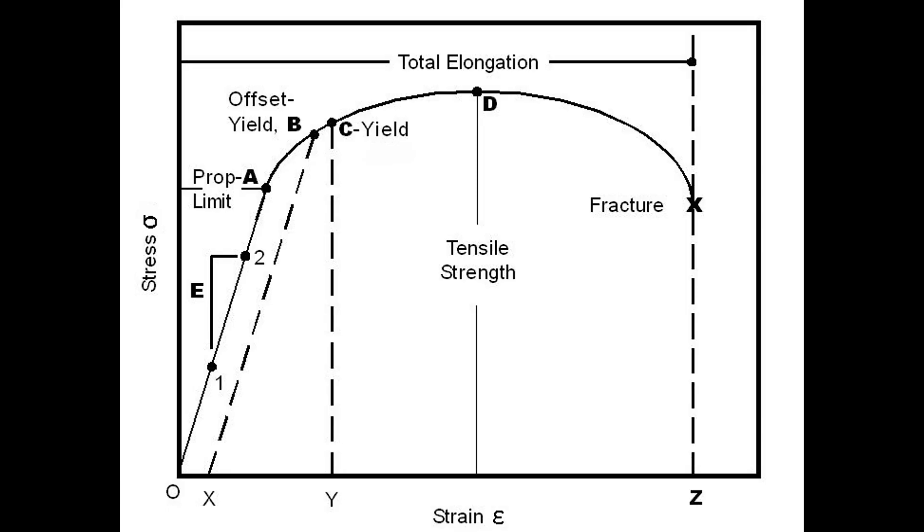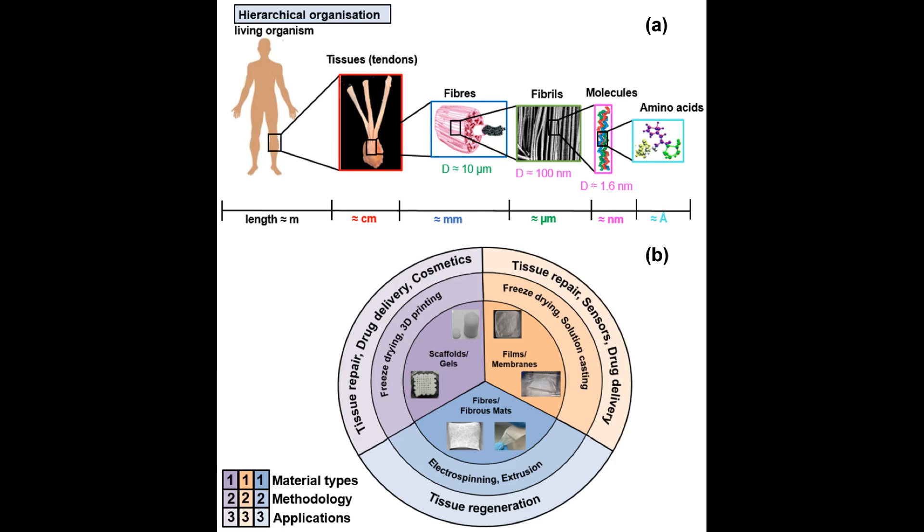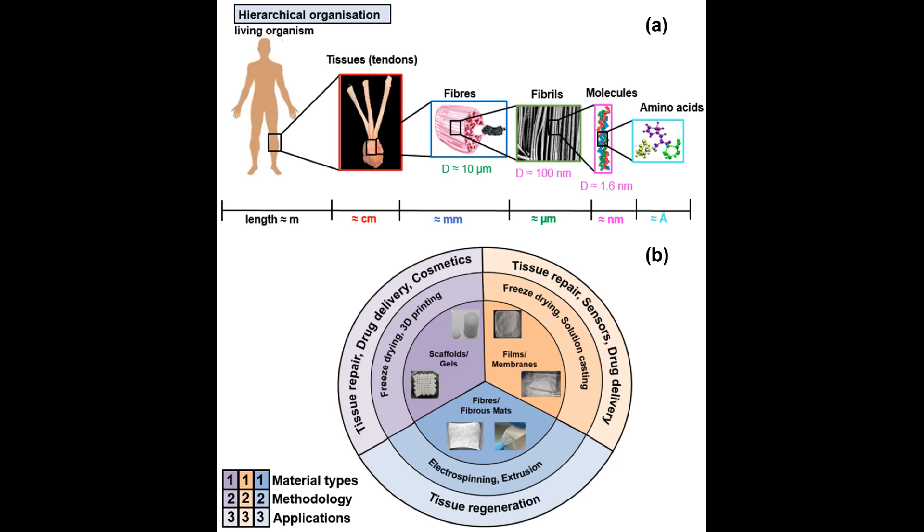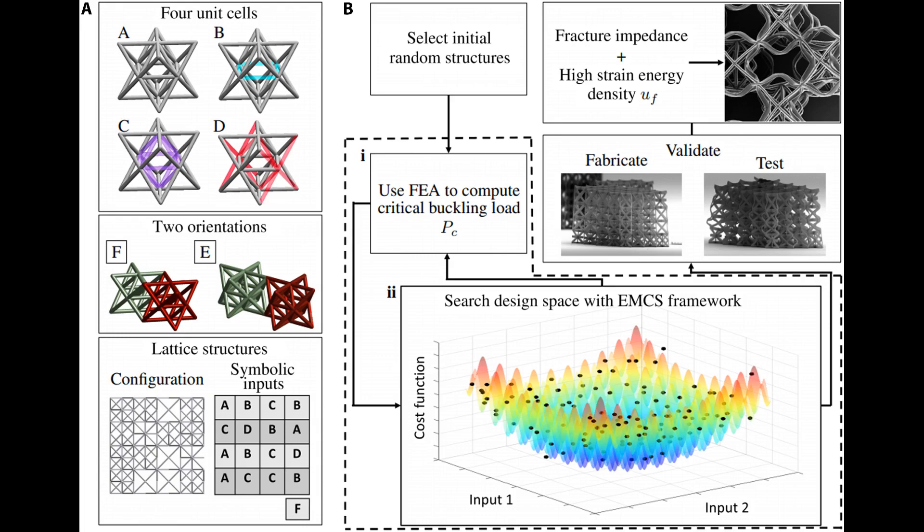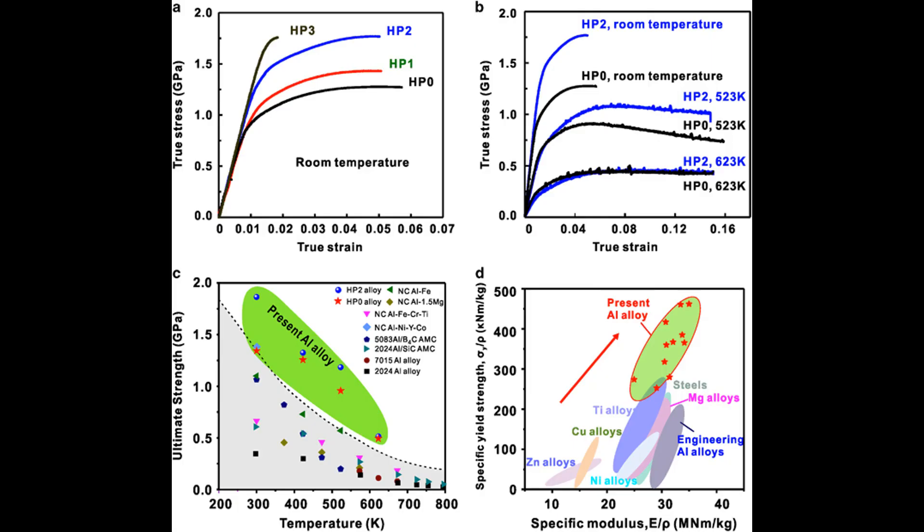Uniaxial stress is often used to study the mechanical properties of materials, including their strength, stiffness, and ductility. It is also used to study the effects of stress on the microstructure and defects of materials, as well as the influence of temperature and other environmental factors on the materials' response to stress.